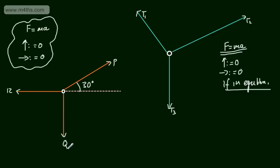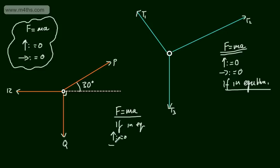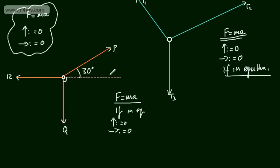We're asked to find the values of P and Q such that this particle is in equilibrium. We have force P inclined at 30 degrees, and Q acting directly down at right angles. We'll use Newton's second law, F equals MA. If in equilibrium, resolving vertically equals zero and resolving horizontally equals zero. I'm going to start by resolving horizontally to find P, then substitute into the vertical equation to find Q.